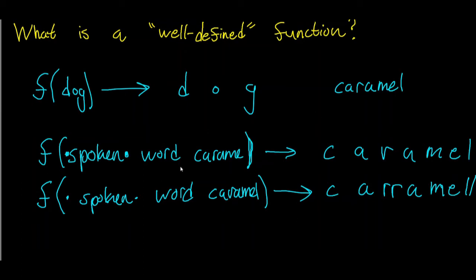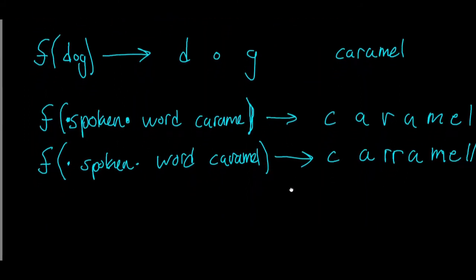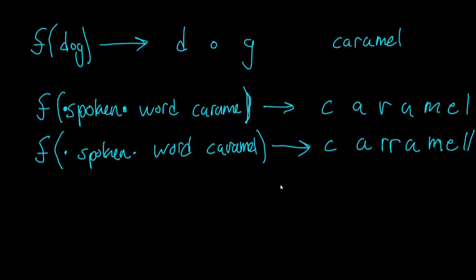This function took two different representations of the same word and outputted two different things, even though the two spoken versions of caramel are the same input value — just a different representation of the same thing. This is a good example of a function that's not well-defined.